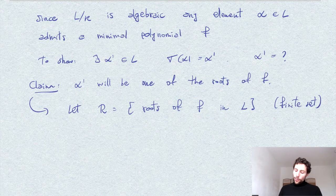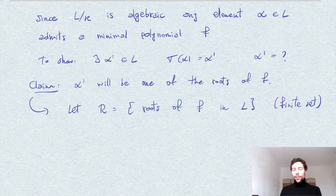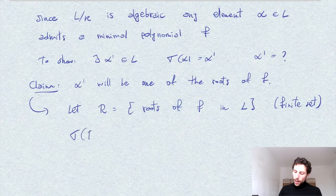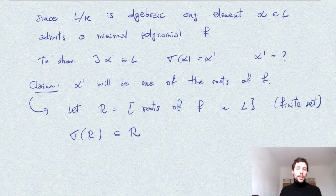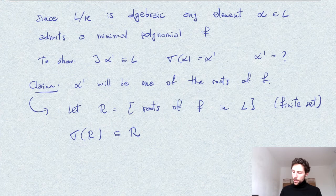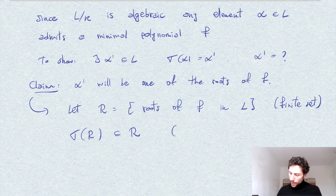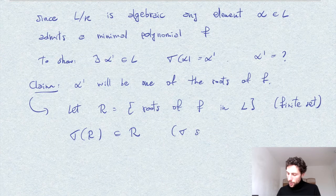So we have a finite set and sigma is a homomorphism that sends roots of F into roots of F. So we have sigma of R inside R, because sigma preserves roots.